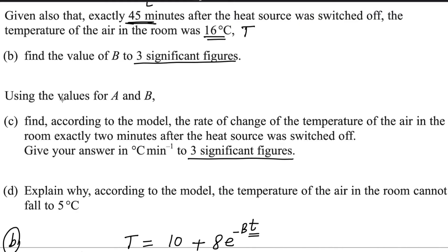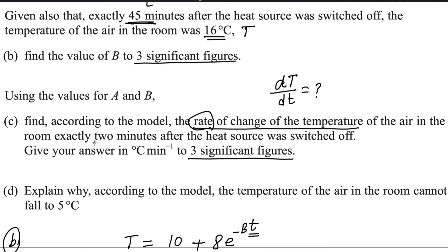For the next part, using the values for A and B, find — according to the model — the rate of change of temperature. Rate of change of temperature means with respect to time, so we need to find dT by dt. This is evaluated at exactly 2 minutes after the heat source was switched off. Give your answer in degrees Celsius per minute to 3 significant figures.